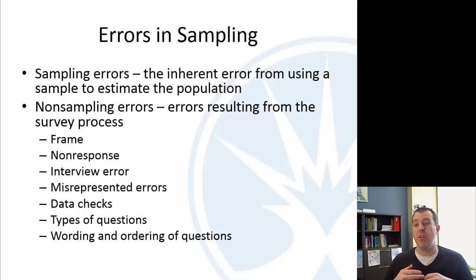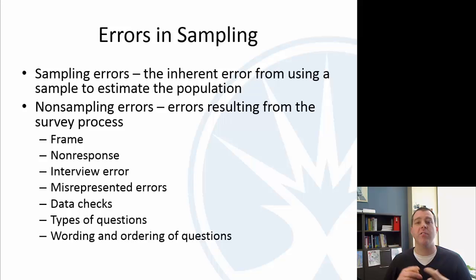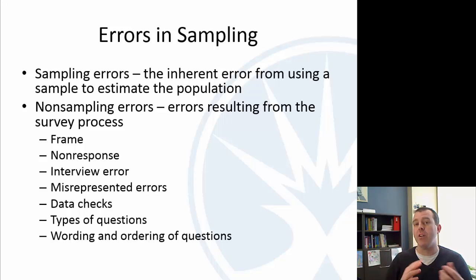Then there are other errors that you can control a little bit. The frame is the list of individuals. So if you're doing an observational study and you're trying to select a sample from, say, ECC students, if your list of individuals is wrong or phone numbers are wrong or you don't have a full list, that's going to be some error.